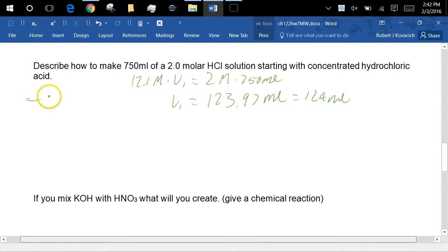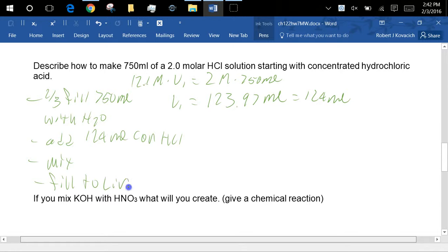So, we'll, like, I don't know, two-thirds fill a 750 milliliter flask with water and then add 124 milliliters concentrated HCl and then mix and then fill to line with dropper.